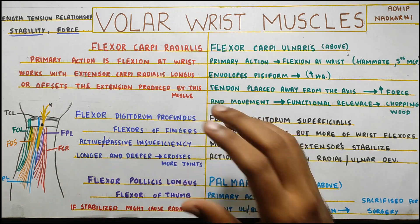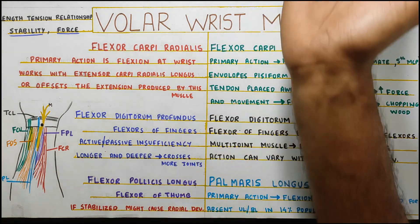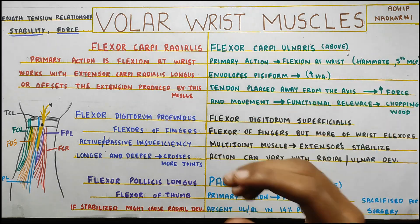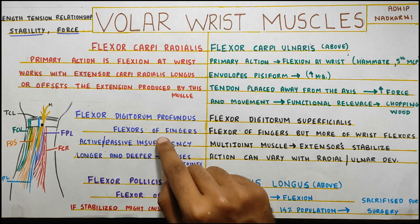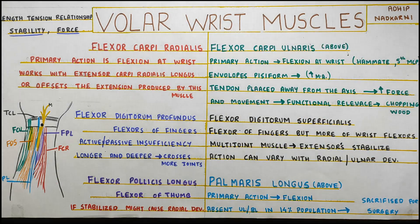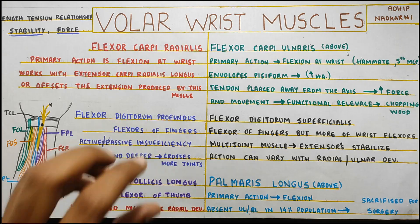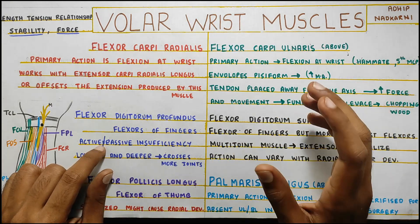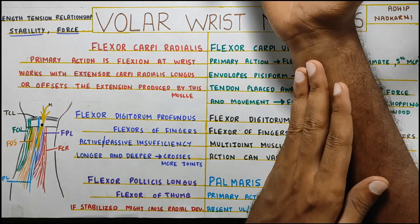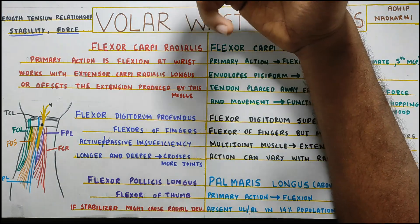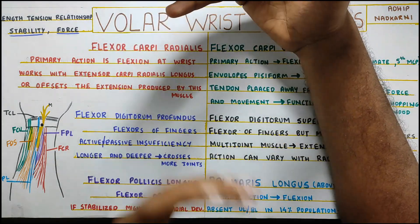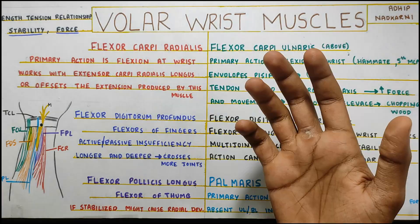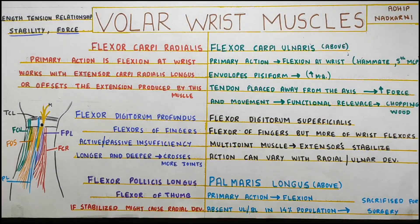Next is your flexor digitorum profundus. This is a very long, deep muscle running in your forearm, going from your wrist joint through all the phalanges and inserting into the distal phalanx. It is a flexor of your fingers along with being a wrist flexor, and the active and passive insufficiency rule applies really well here. Active insufficiency means when the profundus is already contracted at one region, it is very hard for it to generate force at another region along its course. Passive insufficiency means when it is stretched at one region, it is very hard for it to stretch at another region along its course.